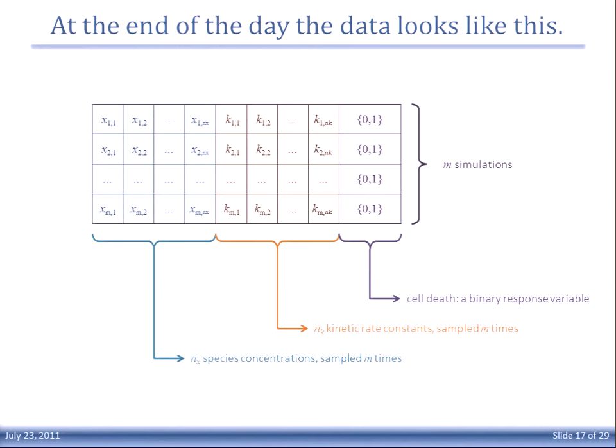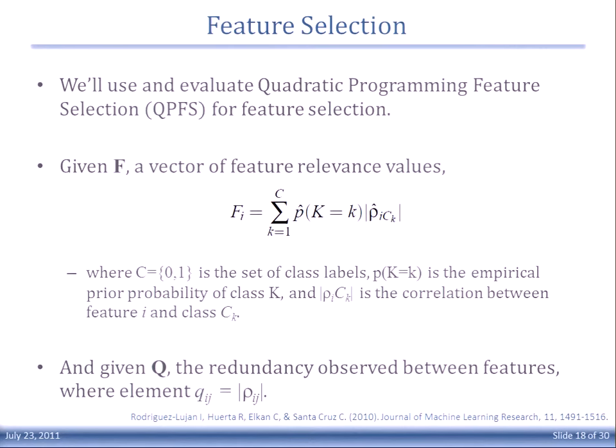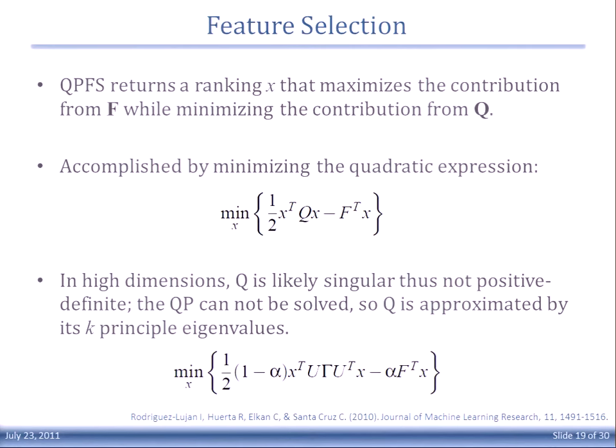For this, we used a procedure called Quadratic Programming Feature Selection, QPFS. In a nutshell, what this does is it maximizes the—it finds features with the maximum relevance or maximum correlation with the response, but minimal redundancy between features. This is how you minimize the number of features that you pull out. Specifically, you have this feature relevance vector, which is a weighted sum of the correlations between the feature and the response. Then you have this redundancy matrix, which is the pairwise correlation between features. To minimize the redundancy and maximize the relevance, you can set that up as a nice quadratic programming problem. Here's this redundancy matrix, here's the feature relevance vector, and then this X is the weighting that you're trying to minimize. This is often singular, so there's no efficient solution unless you do this approximation of this matrix by its principal eigenvalues.